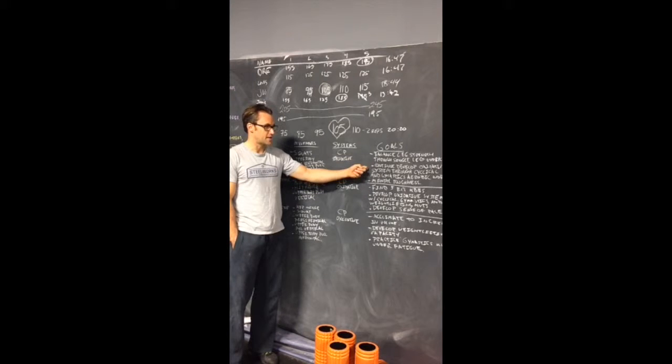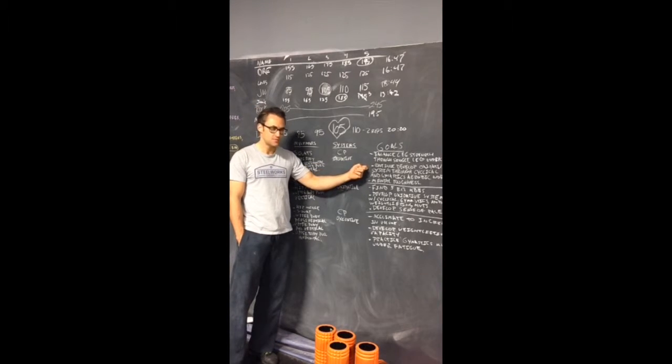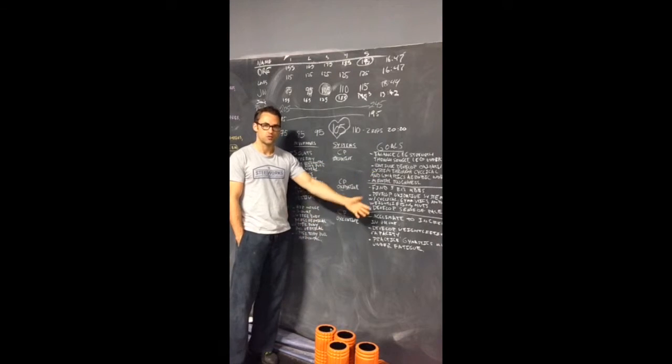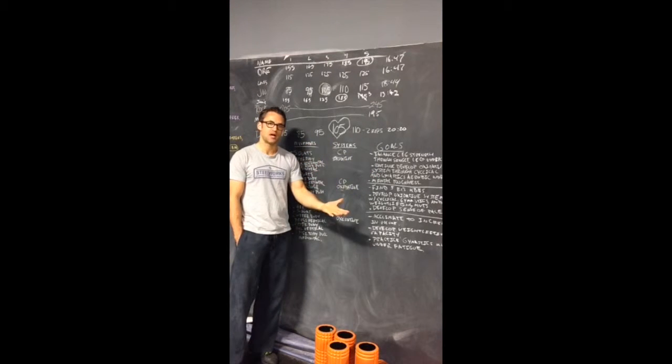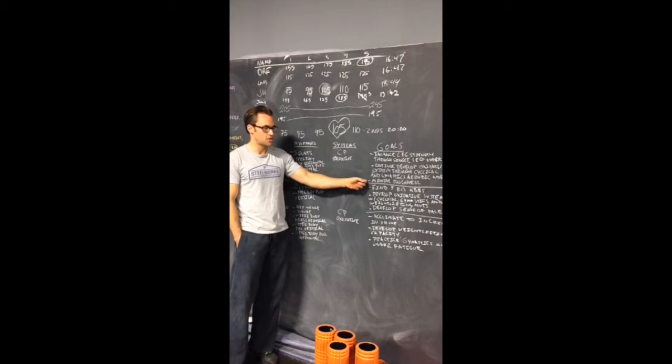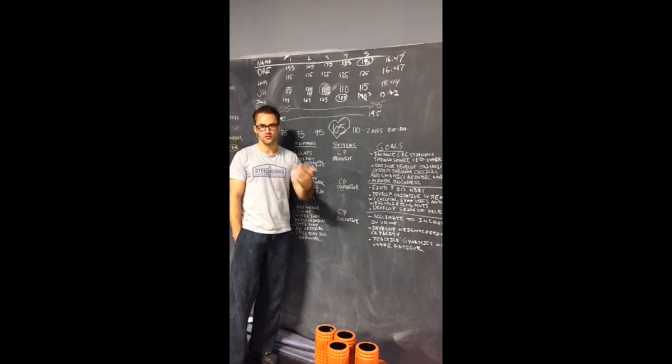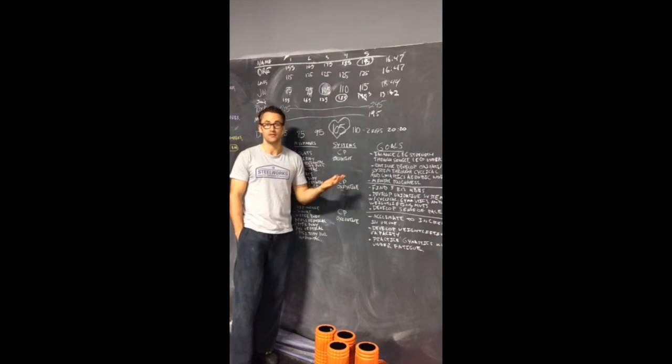We also want to try and continue to develop the oxidative systems through cyclical and gymnastics aerobic work. That's where the row and the burpees come in. And then also to start to develop that mental toughness. For a lot of people who are in the fitness track, this is their first encounter with CrossFit. This is their first encounter sometimes with even doing any kind of working out.